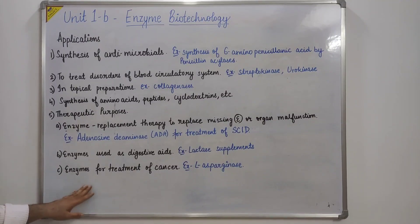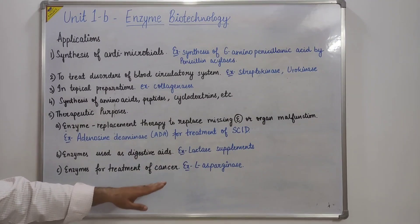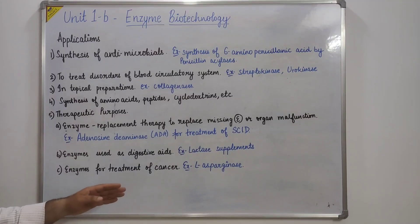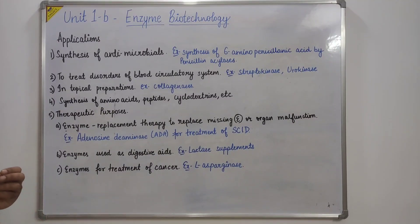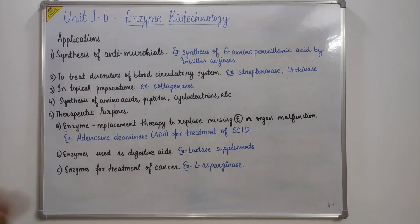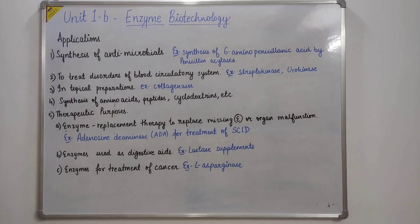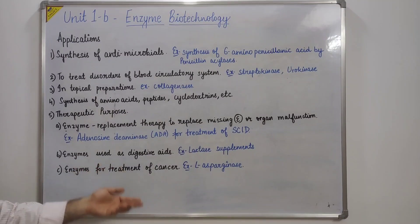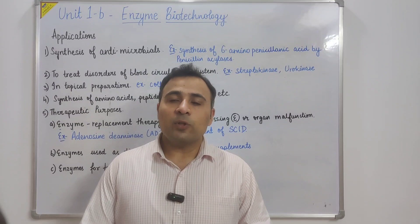An important therapeutic use of enzymes is for the treatment of cancer. A key example is L-asparaginase, which degrades asparagine. Normal cells can synthesize their own asparagine, which is important for cell proliferative activity. However, cancer cells cannot synthesize asparagine and they die in the presence of this enzyme, which degrades the asparagine.